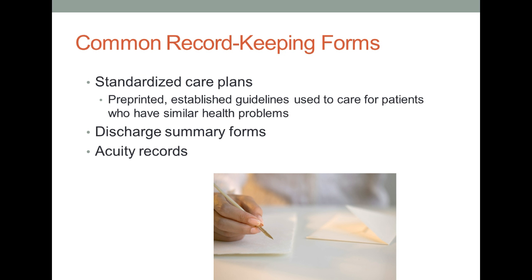Standardized care plans are another common format — pre-printed established guidelines used for patients. For example, if a patient comes in for knee surgery, there is a pre-printed care plan, and nurses can go in and add specific goals and needs for that patient. Discharge summary forms include the patient's medications, diet, and any community resources or follow-up care needed when leaving the facility. Finally, acuity records are often not part of the patient's medical record; they are used for determining hours of care and staff required for a given group of patients, typically to identify workloads for nurses and CNAs.